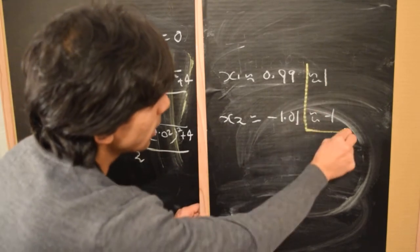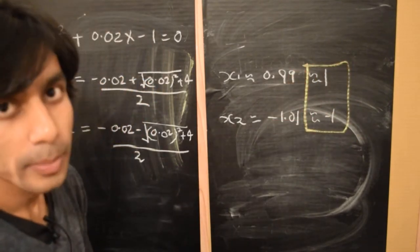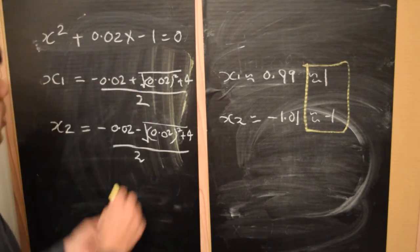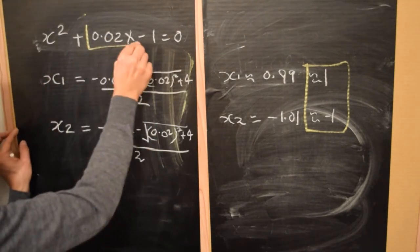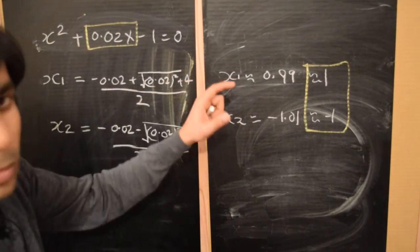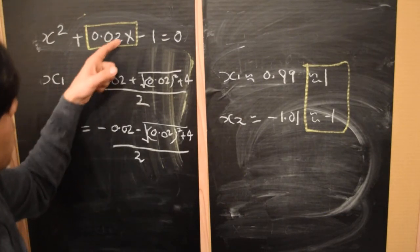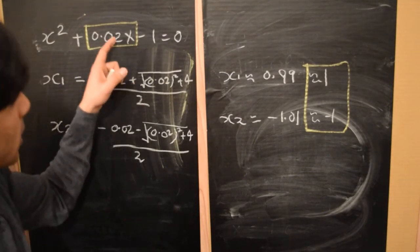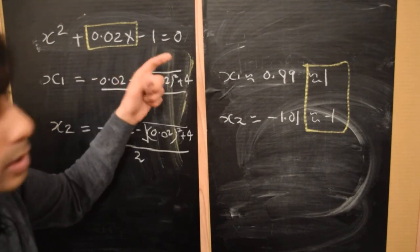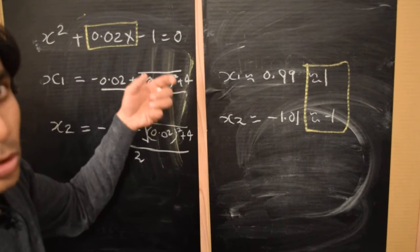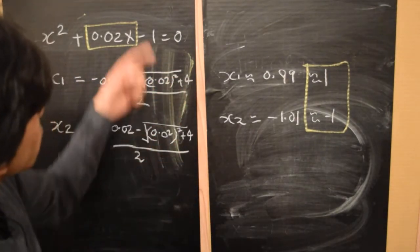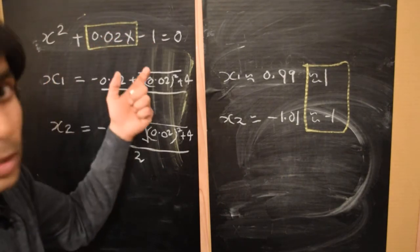So now this is interesting because if you go back to the quadratic equation that we have and look at the middle term, and see that if your solutions are nearly plus or minus 1, the order of magnitude of this term is plus or minus 0.02. This term is minus 1, which has order of magnitude 1, whereas x squared would also be very close to 1. And so this middle term is much smaller than the other two terms.